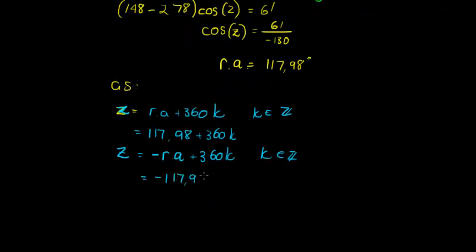Negative 117.98 plus 360, that would be third quadrant, which again it fits everything that it should fit, because we're supposed to be in quadrants where cos is negative, since cos is negative.